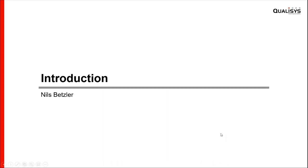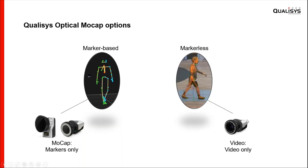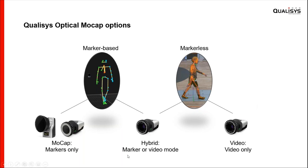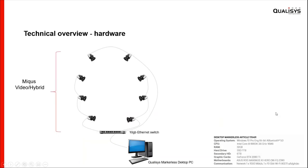As a short introduction, I'd like to talk about the hardware available at Qualisys for markerless and marker-based motion capture. At the bottom you see the Oqus and Miqus cameras, which are our marker-based standard platforms. Around one year ago we looked more at markerless options as well. We have the Miqus video camera for markerless, and earlier this year we launched the hybrid camera, which has two modes to switch between marker recording or video recording — ideal to future-proof your lab.